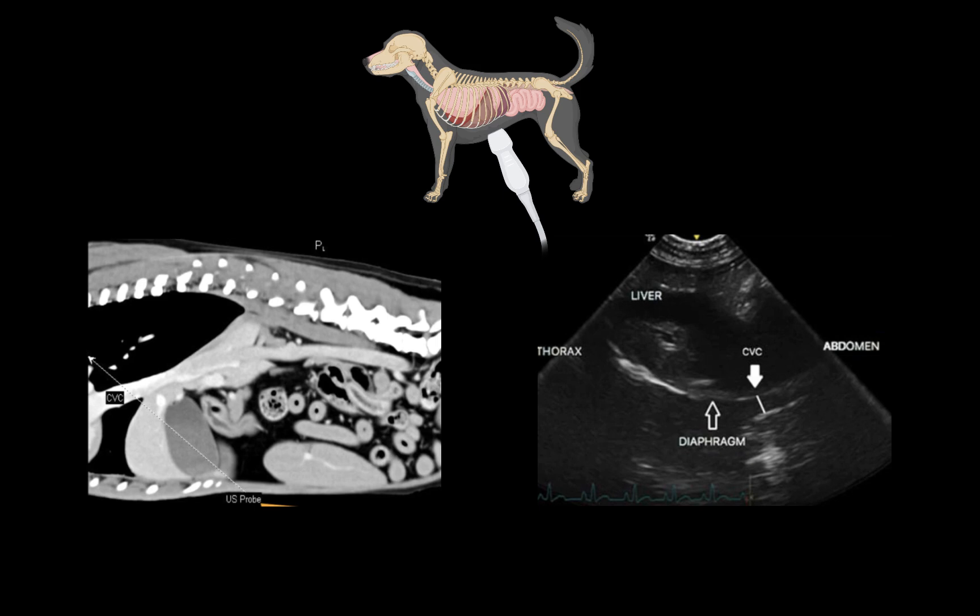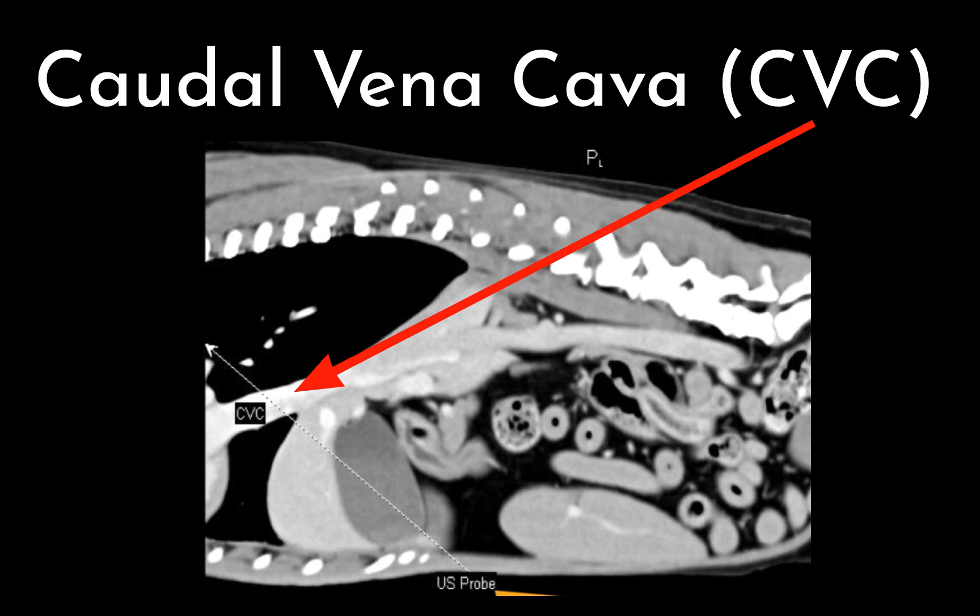The subxiphoid view is the most common location to image the CVC. A sagittal view of the abdomen obtained by a CT scan is depicted on the screen to facilitate understanding of the anatomy and location of the caudal vena cava.